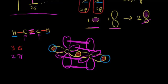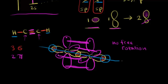Pi bonds prevent free rotation, so we can't rotate about the carbon-carbon sigma bond because of the two pi bonds — no free rotation around a triple bond. The molecule has a linear shape. In terms of bond length, the distance between the two carbons in acetylene is approximately 1.20 angstroms — an even shorter bond length than in the previous videos. This is due to the increased s character, which gives smaller orbitals and a shorter bond distance compared to a double bond or single bond.